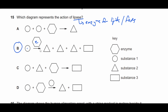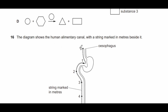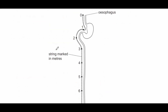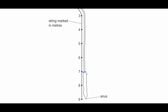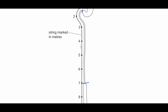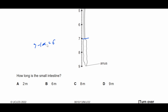Question sixteen: the diagram shows the human alimentary canal with a string marked in metres beside it. How long is the small intestine? The small intestine starts from the end of the stomach to the large intestine — from 1 to 7 on the scale. Seven minus one equals six, therefore the small intestine is six metres long.